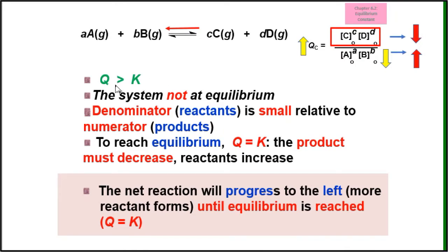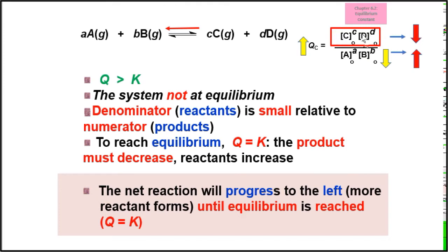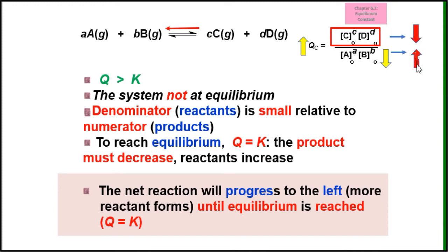The second situation is when Q is larger than K. The system is not at equilibrium — the denominator (reactant) is small relative to the numerator (product), meaning the concentration of product is larger. To reach equilibrium, the concentration of the product must decrease and the concentration of the reactant must increase. So the system has to shift to the left in order to decrease product concentration and increase reactant concentration. The net reaction will progress to the left, forming more reactant until equilibrium is reached and Q equals K.